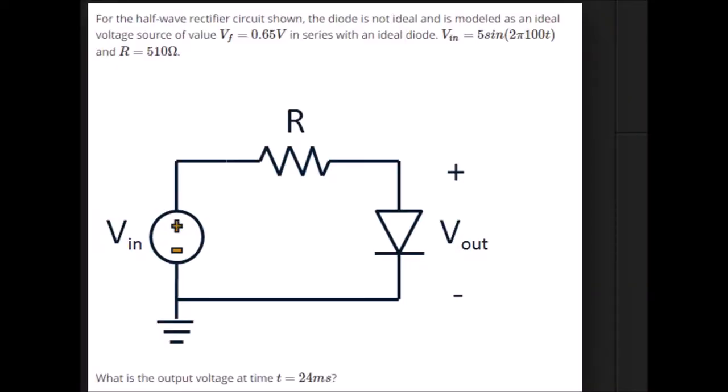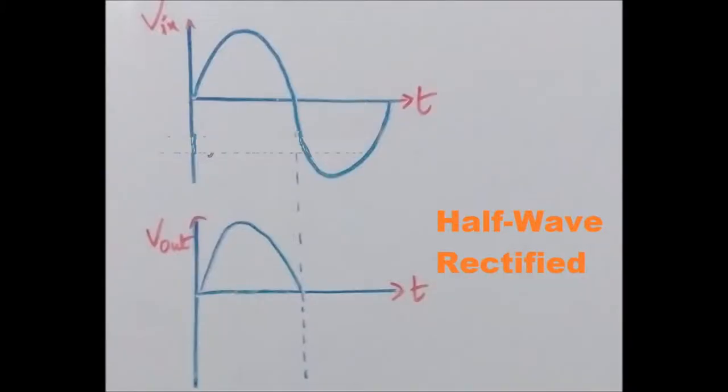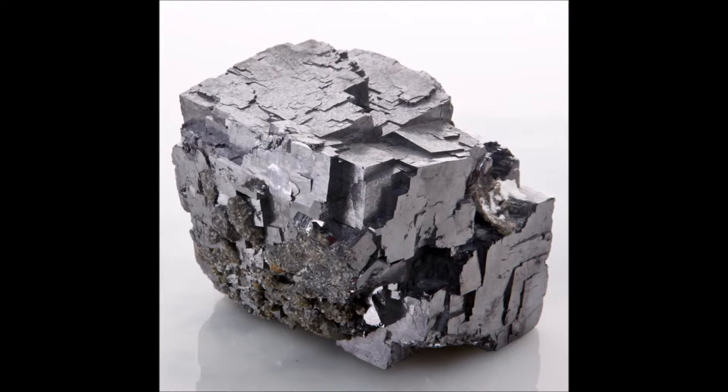Half-wave rectifier circuit. A rectifier is a circuit which converts alternating current (AC) input power into direct current (DC) output power. The input power supply may be either a single-phase or a multi-phase supply, with the simplest of all rectifier circuits being that of the half-wave rectifier. Galena, also called lead glance, is the natural mineral form of lead-to-sulfide. It is the most important ore of lead and an important source of silver.